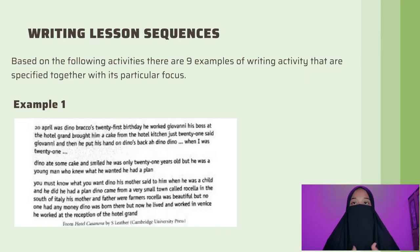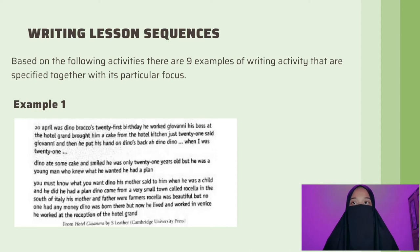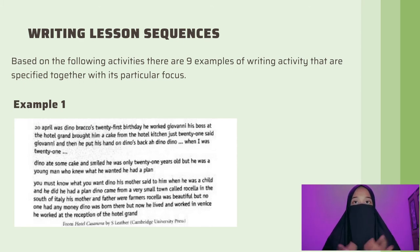Writing lesson sequence: Based on the following examples, there are 9 writing activities specified together with their particular focus. First example: Put an unpunctuated text on the board. Students from different pairs can punctuate it line by line, and the rest of the class can say whether or not they agree. Punctuating poems in this way is also very effective.